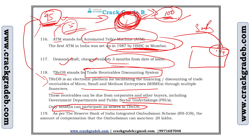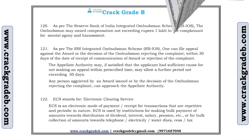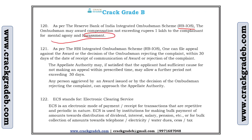As per the RBI Integrated Ombudsman Scheme (RBI IOS), the amount of compensation that the ombudsman can sanction is 20 lakh rupees. The ombudsman may award compensation not exceeding 1 lakh rupees to the complainant for mental agony and harassment. An appeal can be filed within 30 days of the date of receipt of the communication of award or rejection of complaint.